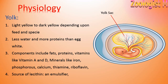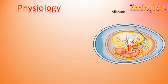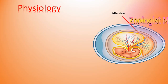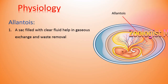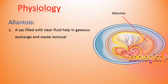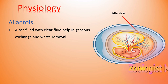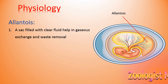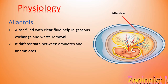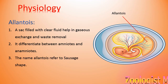The next part of the amniotic egg is the allantois — a very important layer. The allantois is a sac filled with clear fluid that helps in gaseous exchange and liquid waste removal. It differentiates amniotes from anamniotes — those eggs which don't have an amnion. The name allantois refers to its sausage shape.